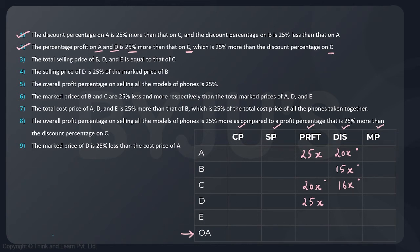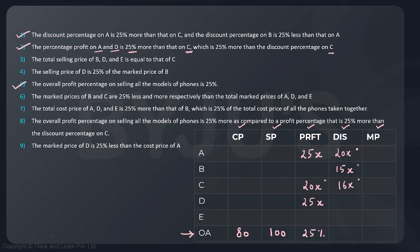Statement five: the overall profit percentage on selling all models of phones is 25%. When the overall percentage is 25%, SP is 25% more than CP. So I can assume CP as 80 and SP as 100. That must raise the question of why we're not using a variable — but one value can be taken as an absolute number when the question mentions no absolute values. So cost price is 80 and SP is 100. This statement has been used.